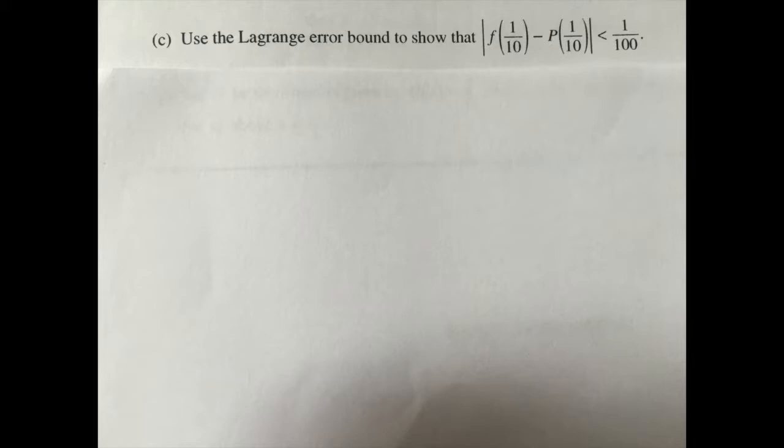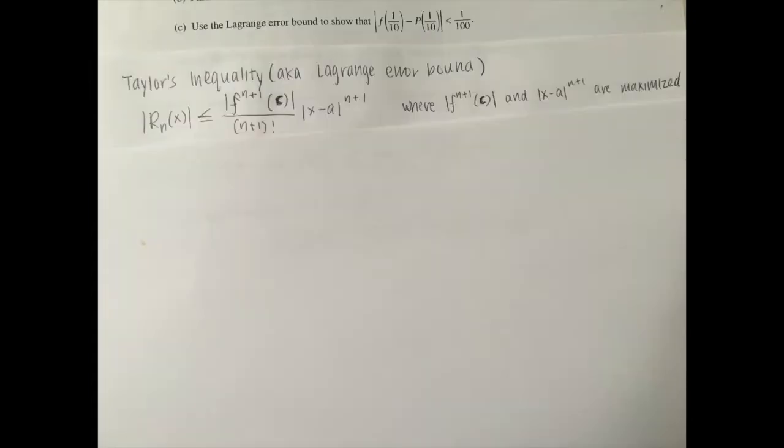Part C asks, use the Lagrange error bound to show that the absolute value of f of one-tenth minus p of one-tenth is less than one one-hundredth. As review, I have written out the Taylor's inequality, which is also known as the Lagrange error bound. Some important things to remember are that the absolute value of n plus one derivative of f at c and the absolute value of x minus a to the power of n plus one should both be maximized.